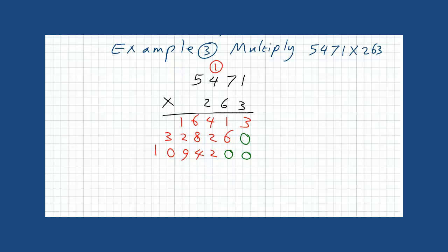Now, let us find the final answer by adding these three answers. 3, 7, 8, 18, 13, 4, 1. And the final answer is 1,438,873.